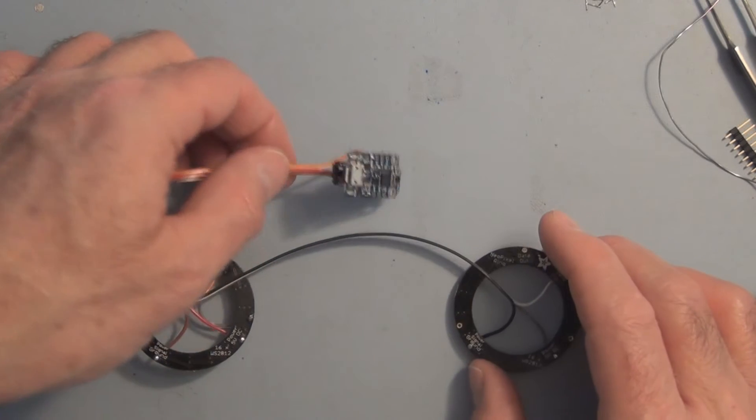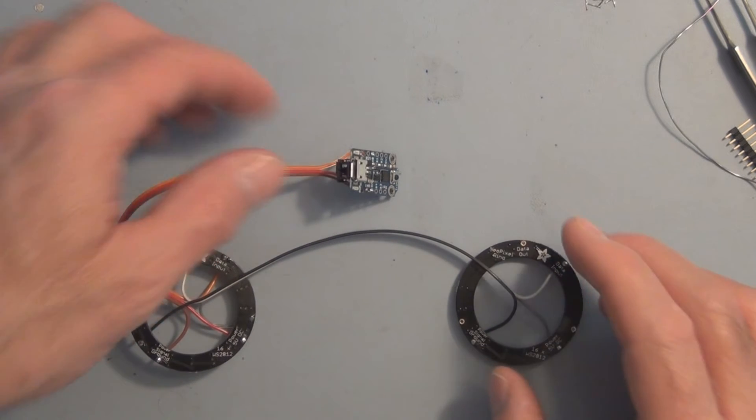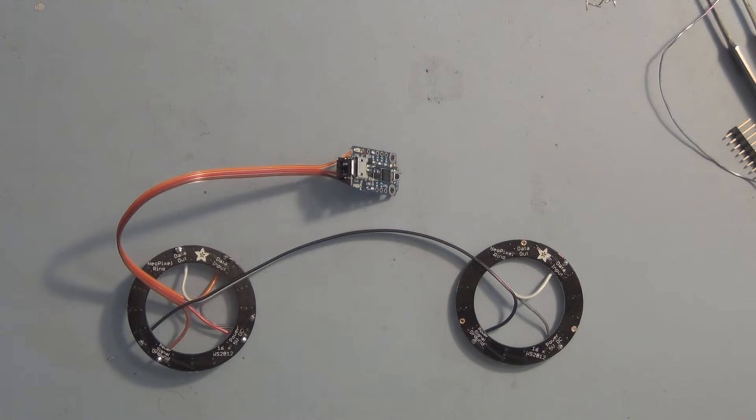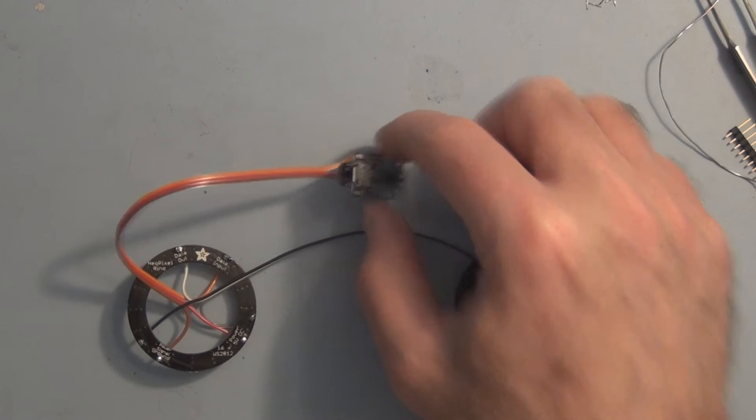I've got the trinket soldered to the two Neo pixel rings and I've already installed the library, the Neo pixel library into the Arduino IDE. They've got a program on the Adafruit website, just need to copy and paste it into the IDE and then upload it to the trinket.